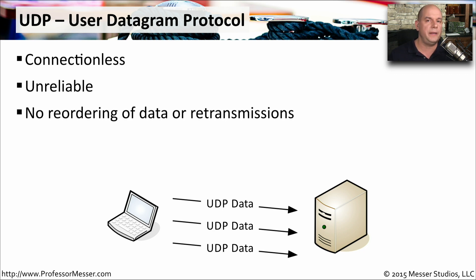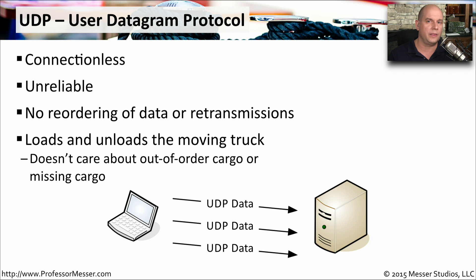Unlike TCP, UDP doesn't use sequence numbers or any type of acknowledgment, so it can't send retransmissions and can't reorder information. Once information is sent, it's simply received as is. UDP doesn't work like the moving truck analogy for TCP — with UDP, we fill up the truck and send it on its way, but we have no idea if that truck ever made it to its remote destination.